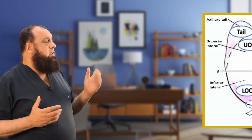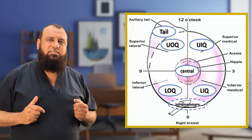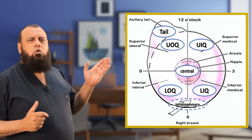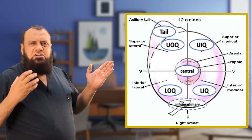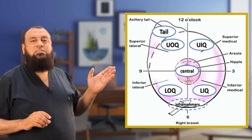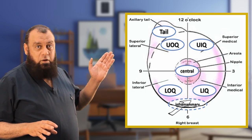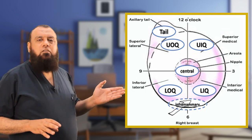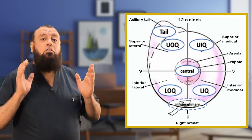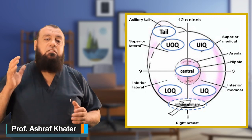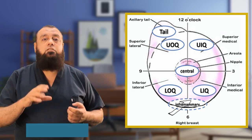The breast has seven quadrants: upper outer, upper inner, lower outer, lower inner, and the central quadrant (just behind the nipple-areola complex). The axillary tail is considered the sixth quadrant, and the inframammary part is a hidden seventh quadrant. All seven quadrants must be examined by the surgeon or by the female herself during breast self-examination.